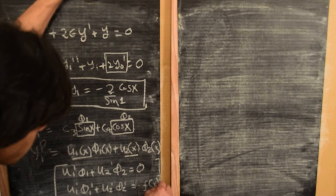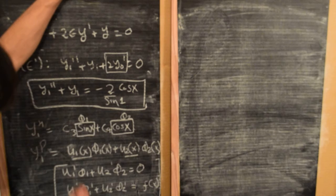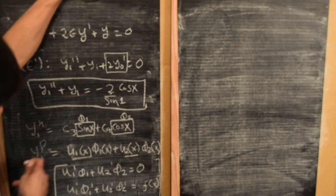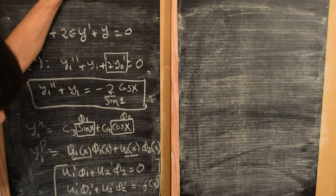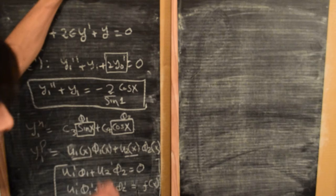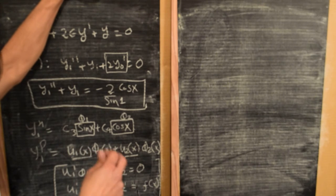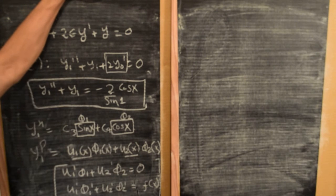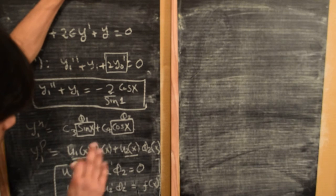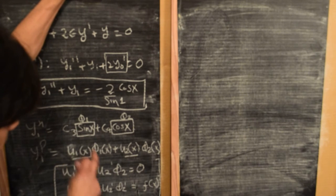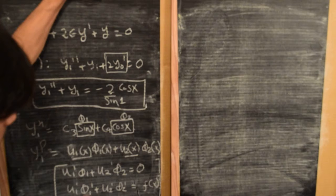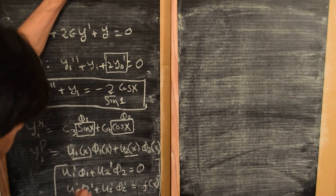If we can find u₁ and u₂ satisfying these two equations, those functions give us the particular solution. We'll identify: φ₁ = sin(x), φ₂ = cos(x), and f(x) = −2·cos(x)/sin(1). u₁ and u₂ are what we need to figure out, so let's solve and see what they turn out to be.